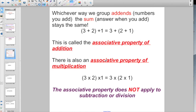There's also an associative property of multiplication. But be aware, the associative property does not apply to subtraction or division. And even if you mix it up—if you have one adding and one multiplication sign—it's not always going to be equal.